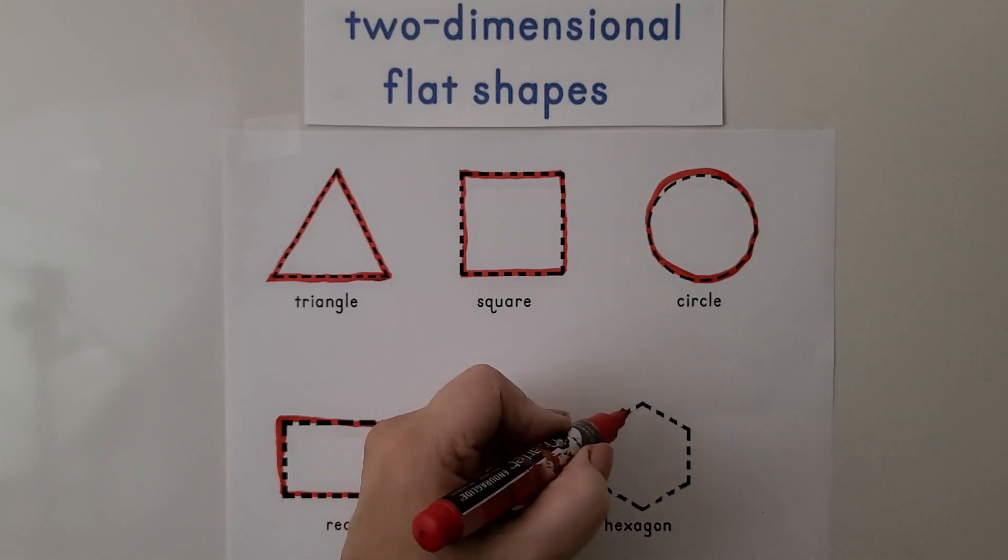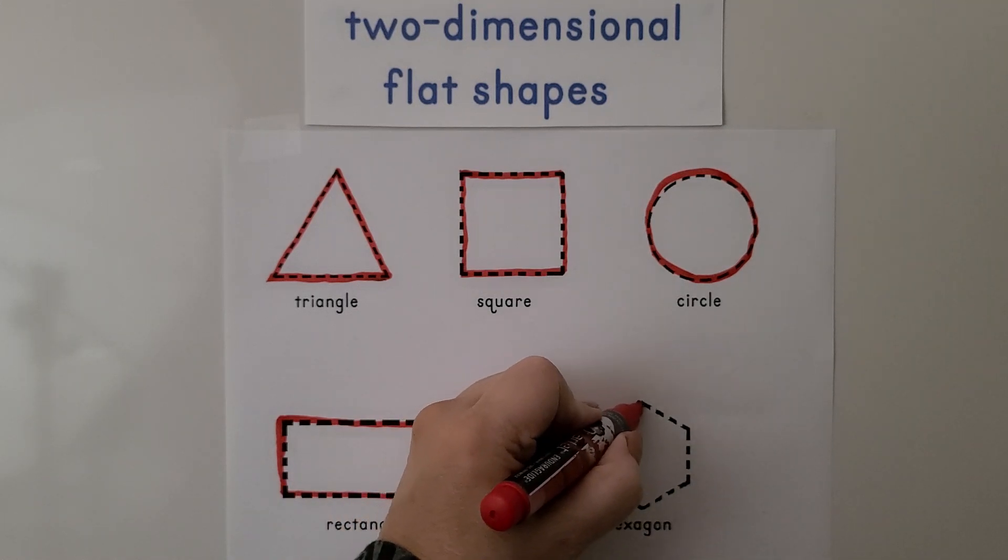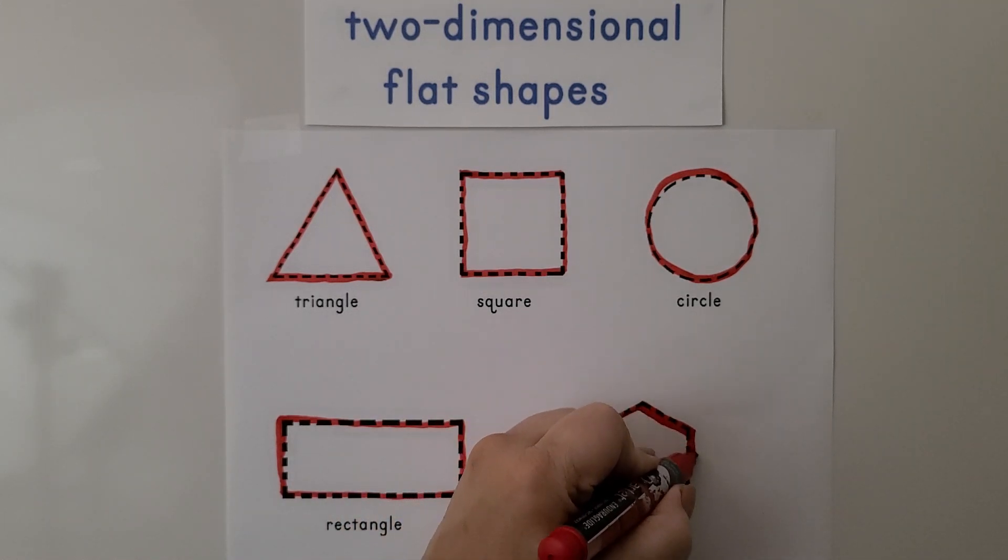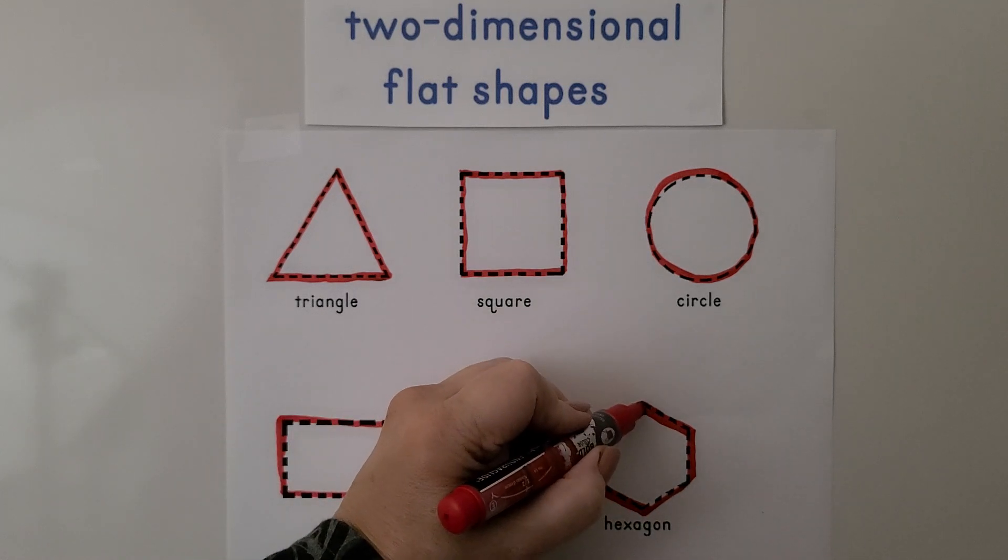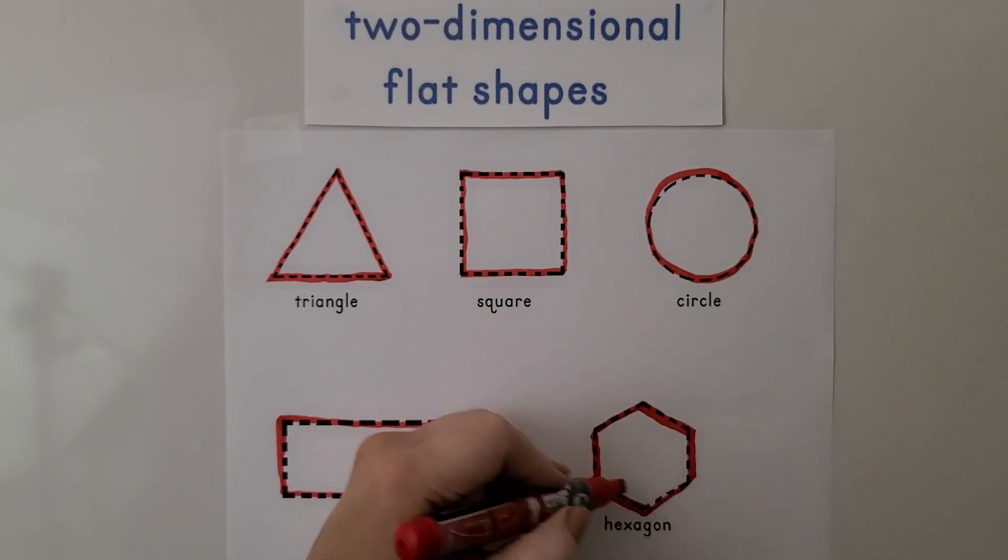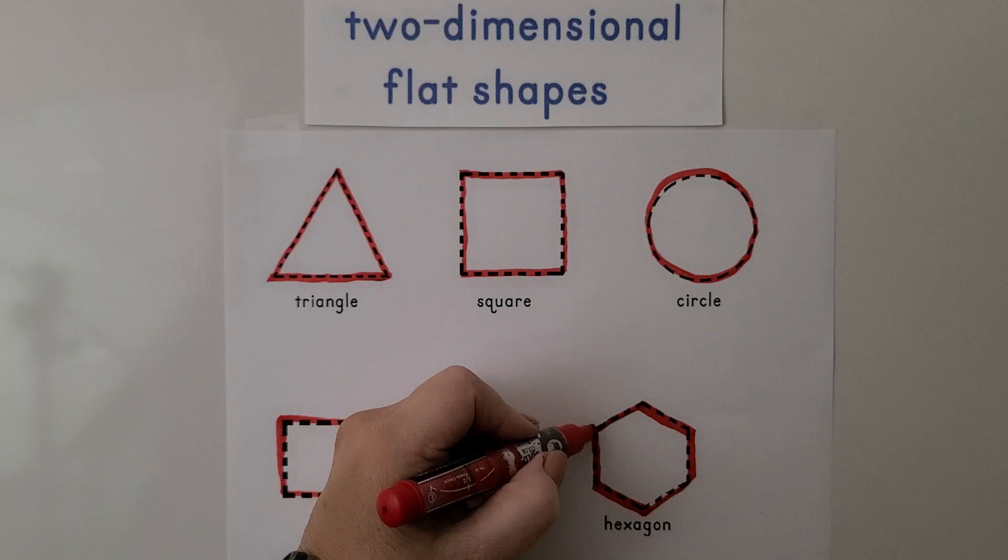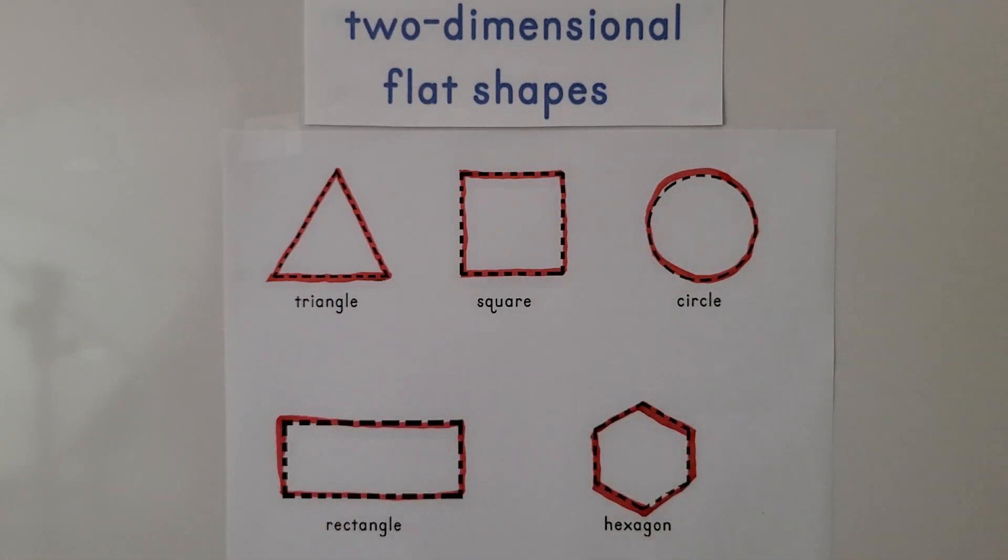Here we have a hexagon. It has one, two, three, four, five, six sides, and it has one, two, three, four, five, six corners. That's six vertices.